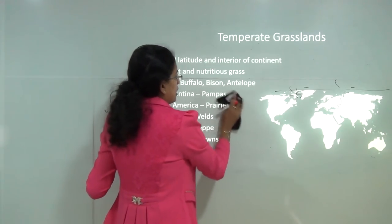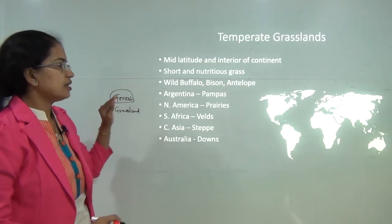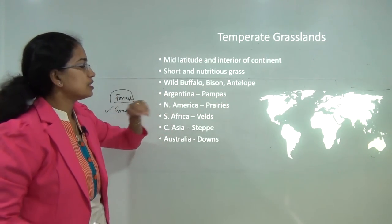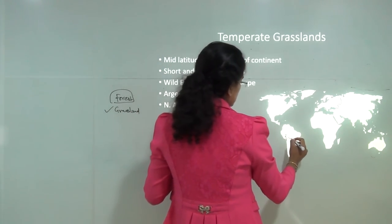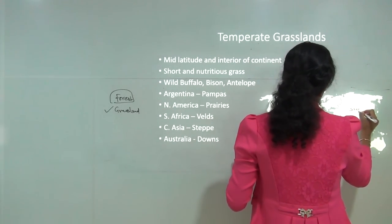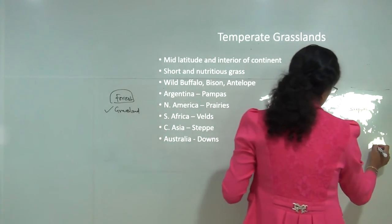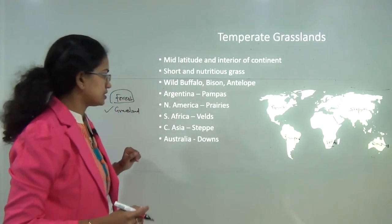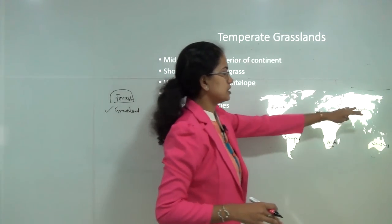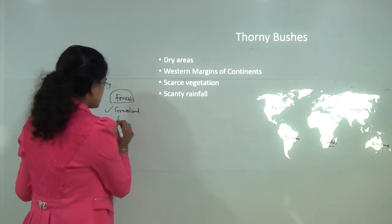In temperate grasslands, the grasses are more nutritious. They occur in the mid-latitudinal region and interior parts of the continent. Common wildlife includes wild buffalo, bison and antelopes. In South America they are called pampas, in North America prairies, in Central Asia steppes, in South Africa veld, and in Australia downs. So prairies, pampas, veld, steppes and downs are the common temperate grasslands found across the world.